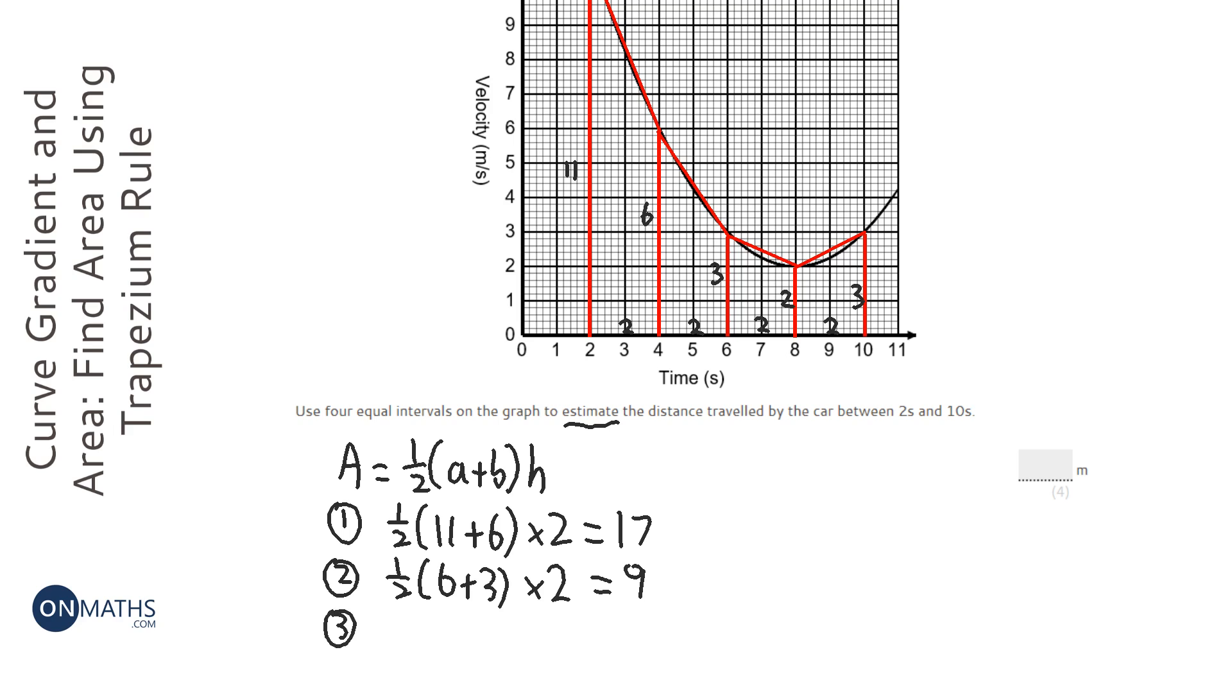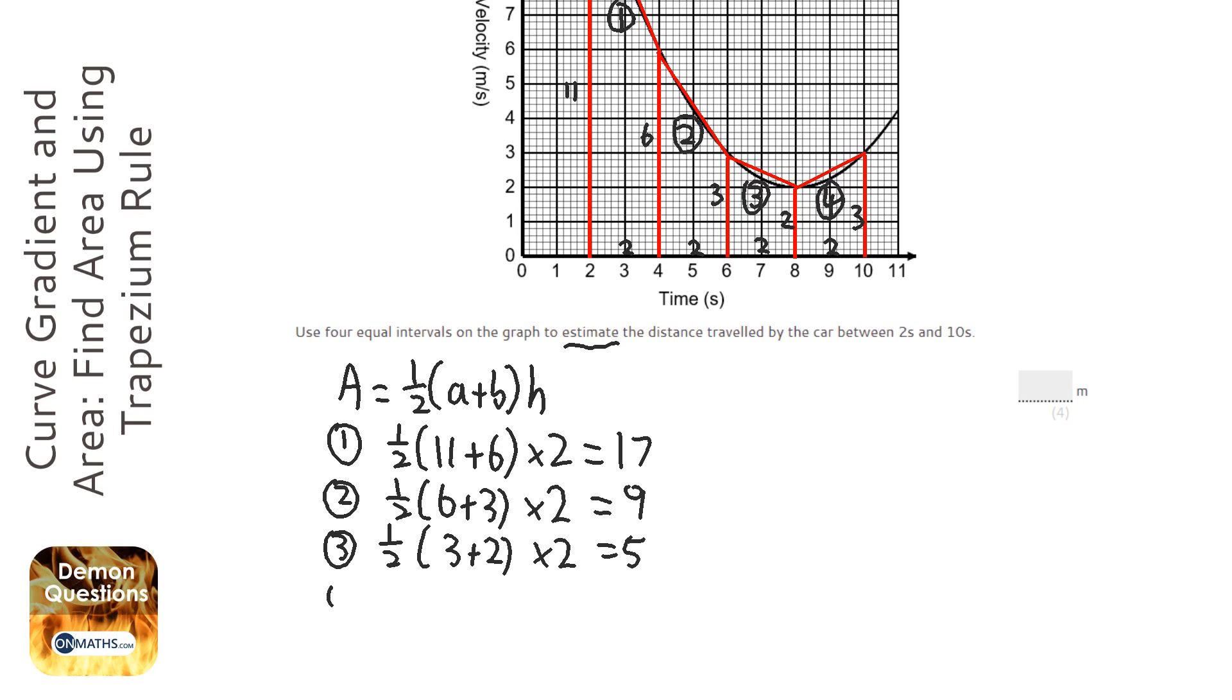The third one, the third trapezium. And if you want to, you can actually just number them on the actual thing itself to show the examiner, yep, this is the one I'm trying to work out. So that's going to be half, and what is it this time? 3 plus 2 times 2, which is just going to be 5. Let's just scroll down a little bit. So the fourth one is going to be half 2 plus 3 times 2, which is also going to be 5.